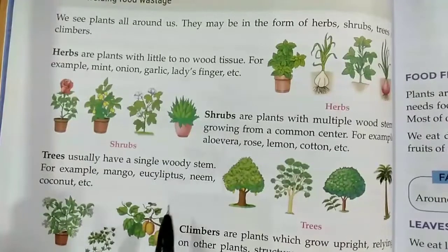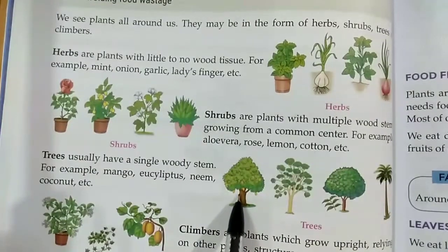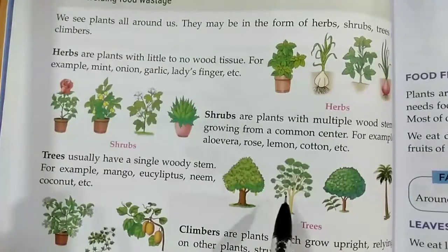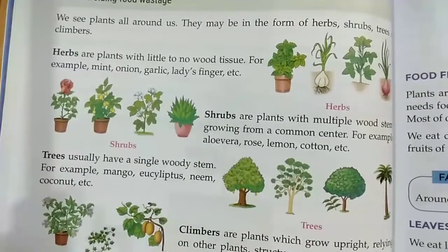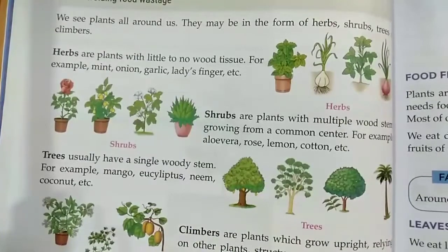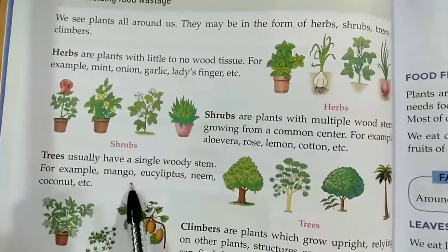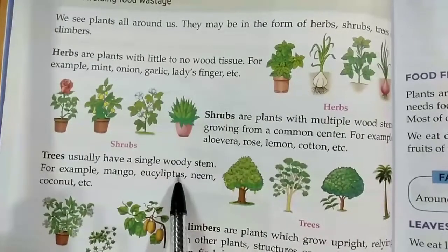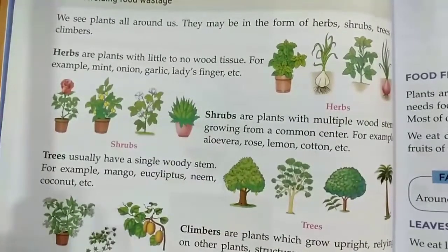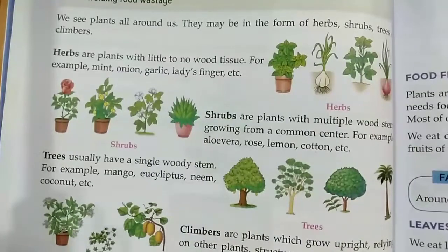Trees are big plants with a single woody stem, which we call a trunk. The trunk is single, woody, and strong, and trees are big in size. For example, mango, eucalyptus, neem, coconut, etc. These are called trees.